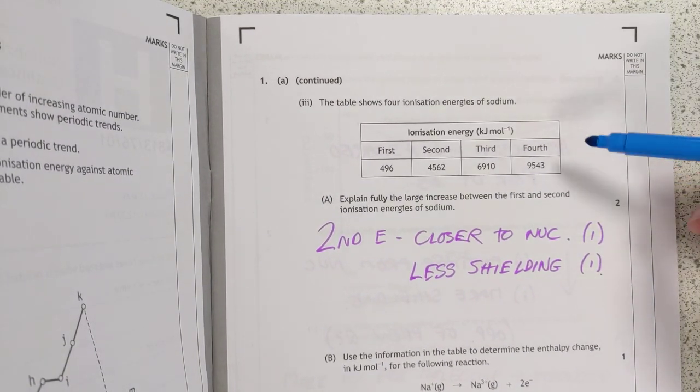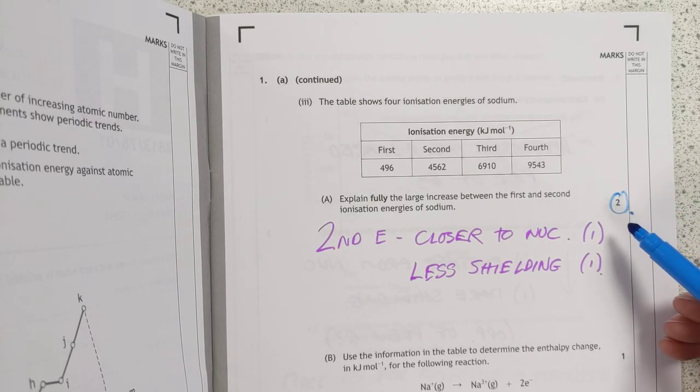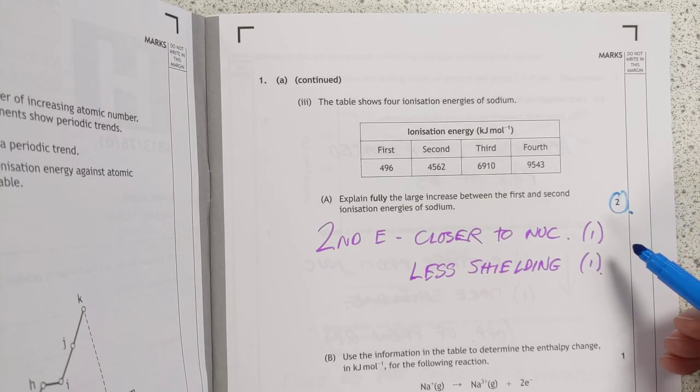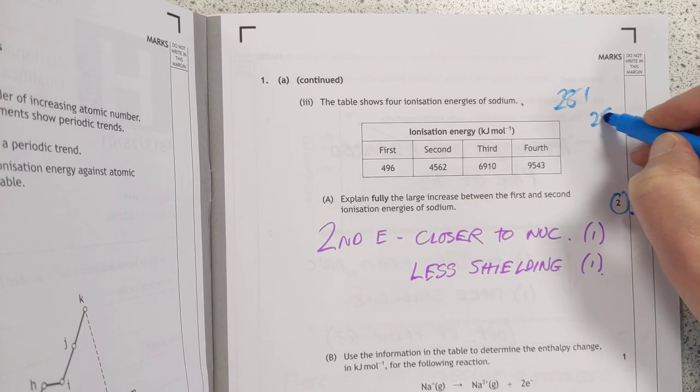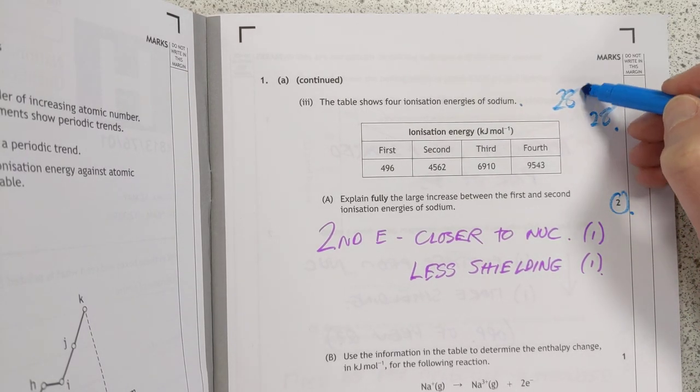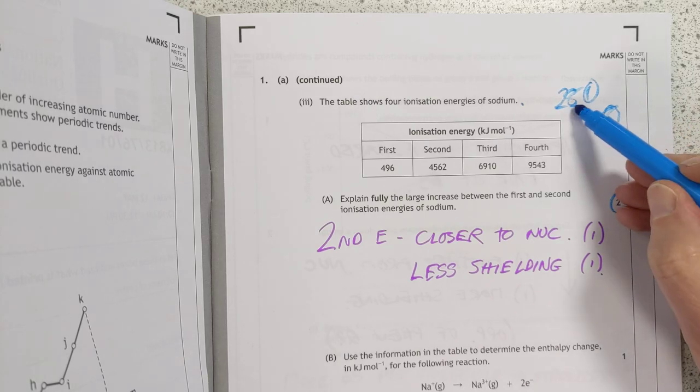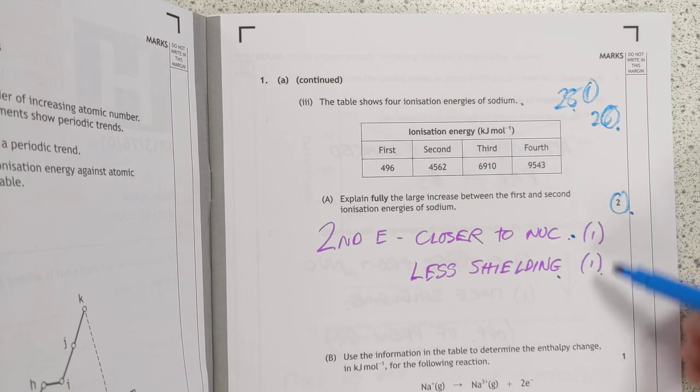Explain fully for two marks the large increase between the first and second ionization energies. When you strip off for sodium, you're going from 2, 8, 1 to 2, 8. And you're removing this electron, then you're wanting to remove one of these. So there's an entire layer of shielding missing. Also, it's just simply closer to the nucleus. I think that's the two marks.